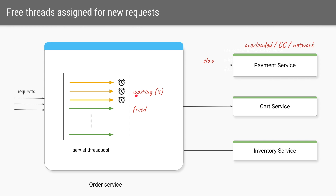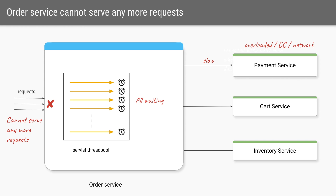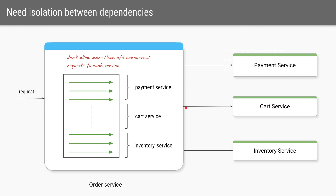So now from two we have three threads waiting for the payment service to return a response. After a while, even if we have a mix of requests coming in, since the payment service is slow and all the threads calling it are not getting freed quickly, it is possible that all the threads at one point in time will be waiting for the payment service. That is when the order service itself cannot serve any more requests — even of type cart service or inventory service. A problem in one dependency is not allowing the order service to fulfill requests for any other dependencies.